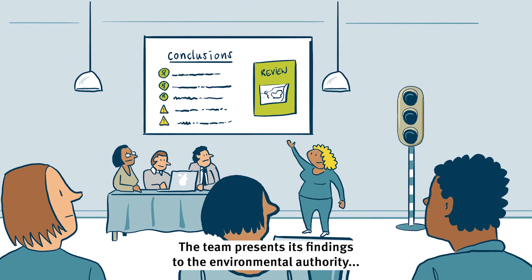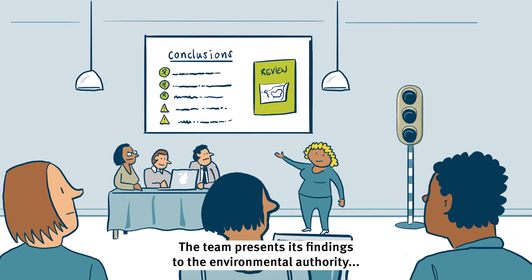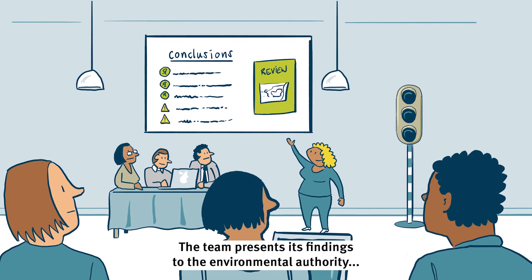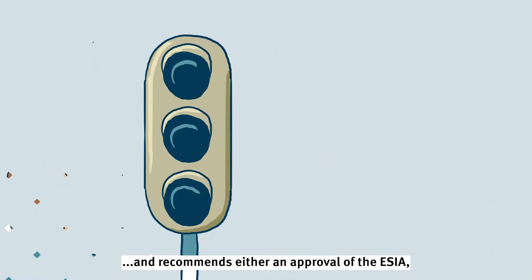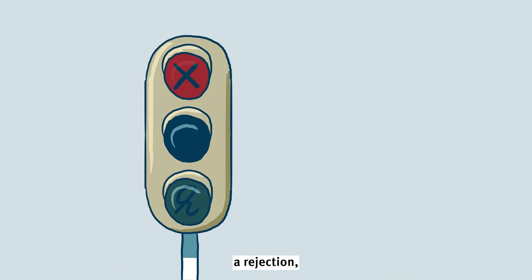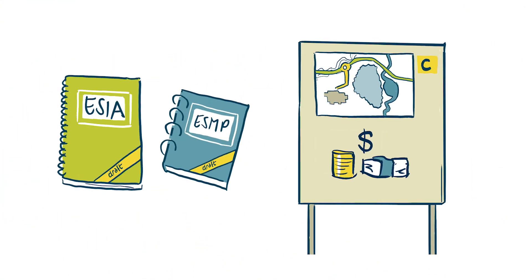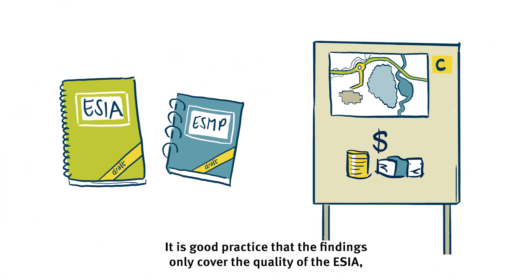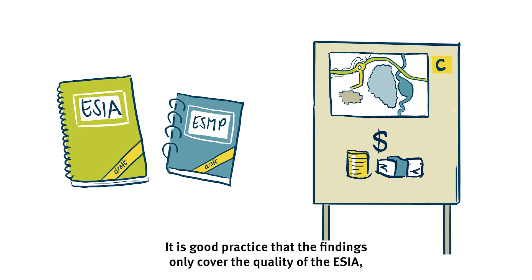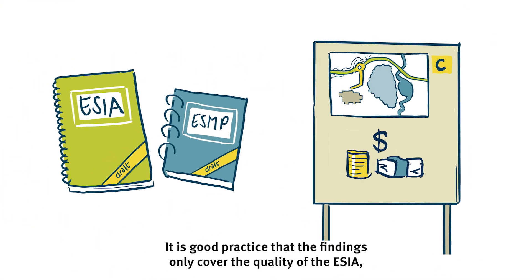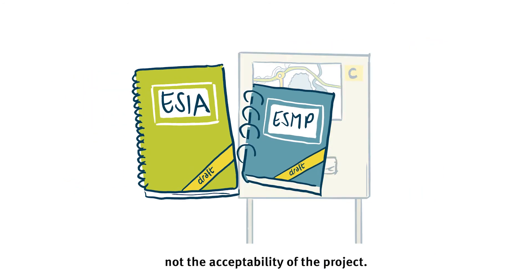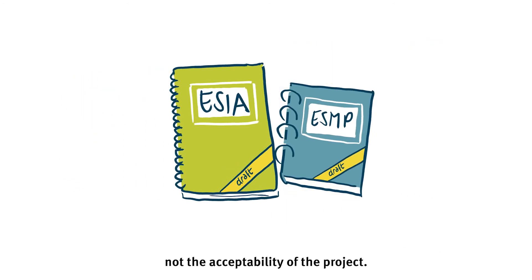The team presents its findings to the Environment Authority and recommends either an approval of the ESIA, a rejection, or a request for additional information. It is good practice that the findings only cover the quality of the ESIA, not the acceptability of the project.